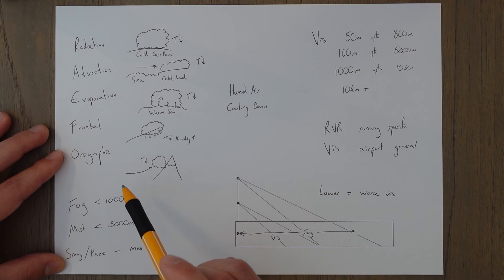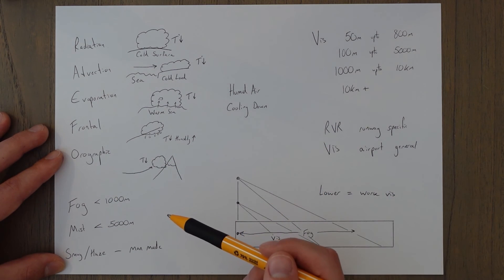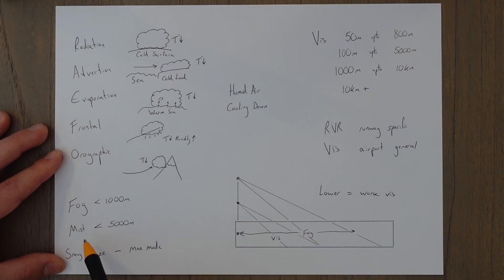And orographic fog is when terrain, a mountain, causes the air to rise, it cools as it rises and forms a cloud, but because that cloud is very close to the land because it's close to the mountain, it's considered fog. And the difference between fog and mist is just the visibility - below a thousand meters is fog and below five thousand meters is mist. And if you've got visibility problems due to man-made factors you either call it smog or haze.